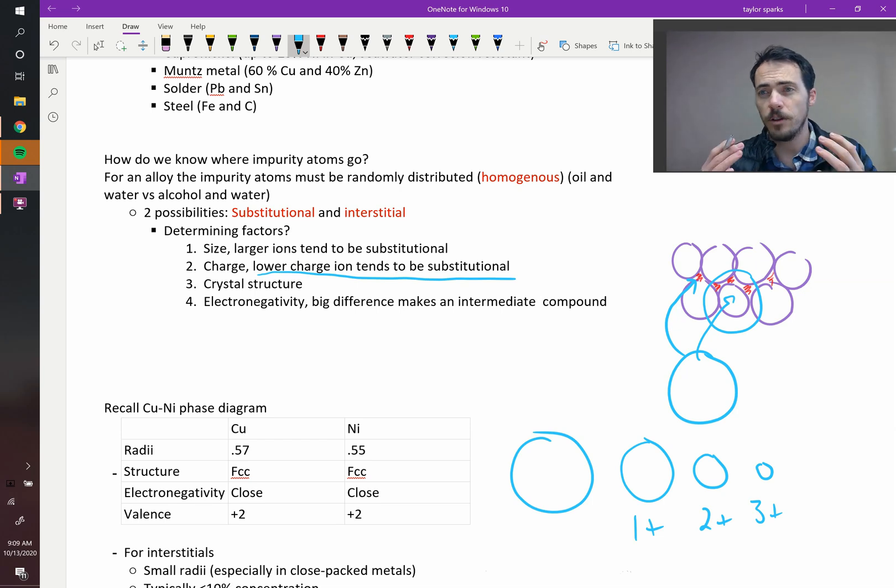Because the same amount of positive charge is present in the nucleus, but as you remove electrons, it's going to squeeze that electron cloud tighter and tighter. Therefore, for the same reason as before, a big atom is going to be substitutional. A really high valence one will be smaller atoms, so it might be interstitial.